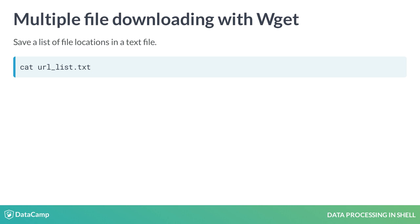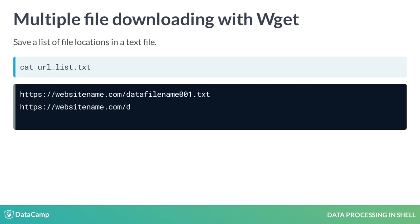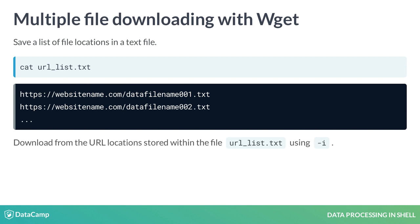Let's use the cat command to print and preview the URLs really quickly. After confirming that the URLs are indeed stored in this file, we can now pass this file to wget. Note that we need to preface this with a dash lowercase i option flag so wget knows that we are reading URLs from a local or external file. The command reads: wget -i url_list.txt.